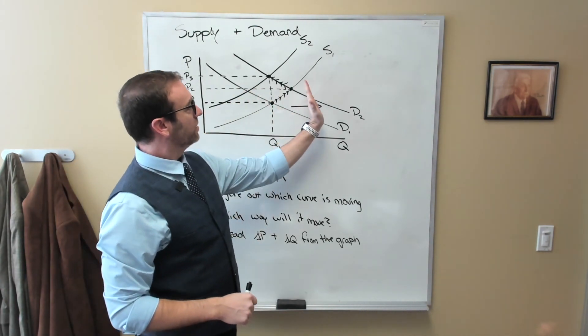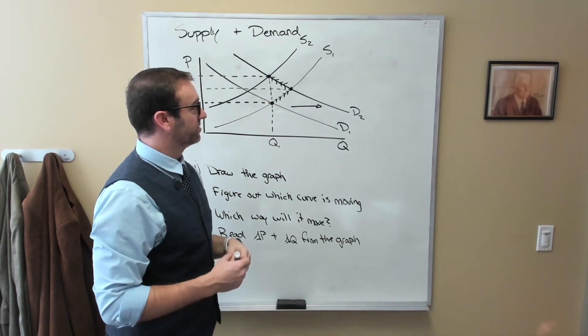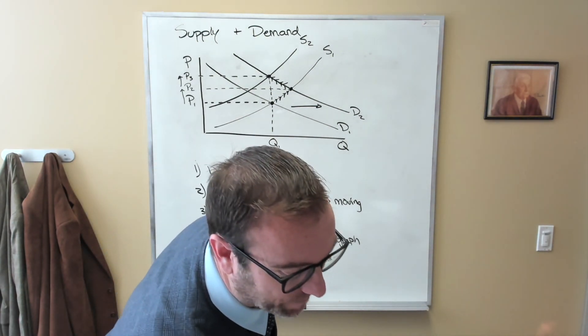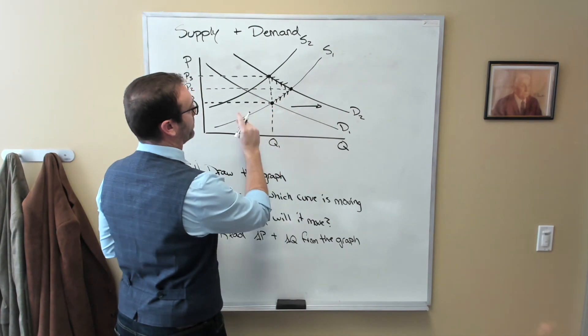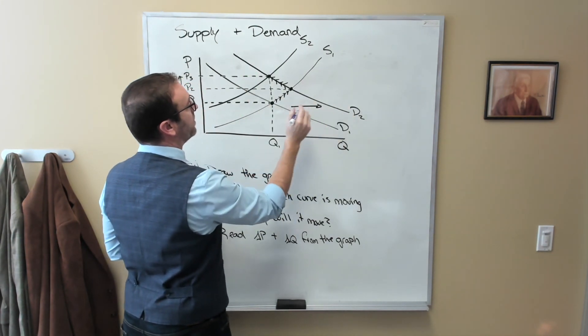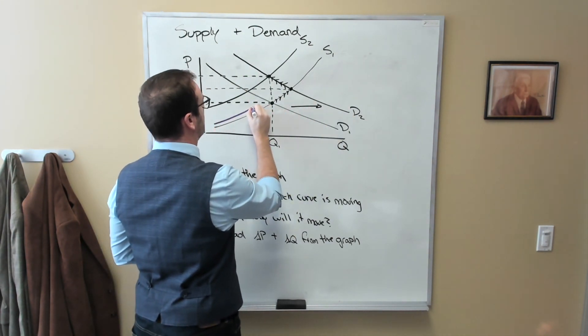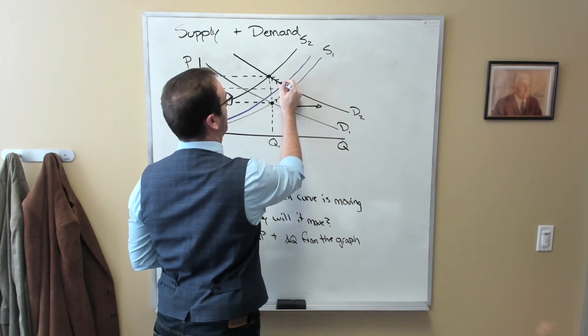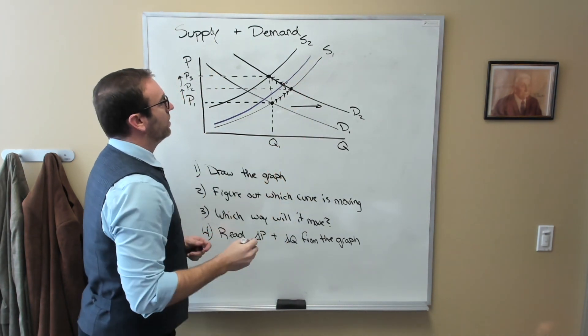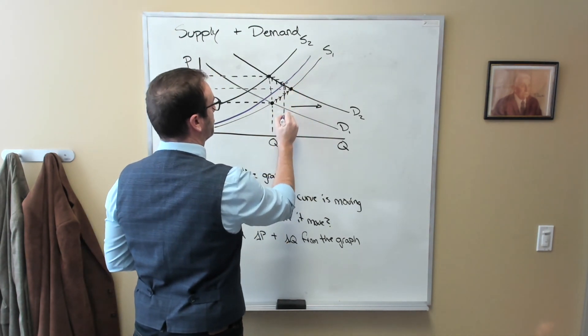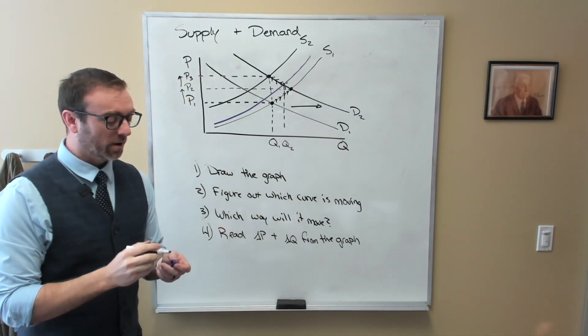If the demand curve shifts further to the right than the supply curve, so for example, if we had a big increase in demand here and only a very small decrease in supply, well then we would get an increase in price, but an increase in quantity.